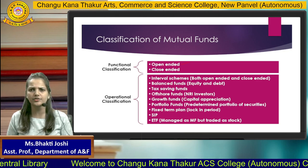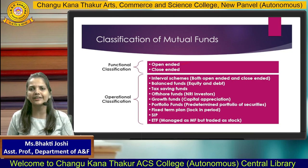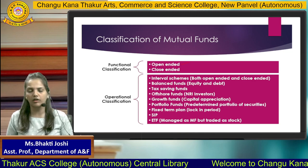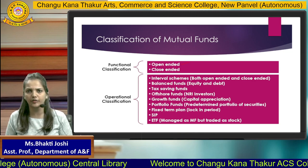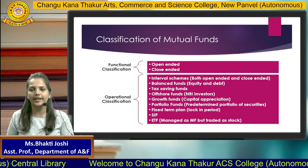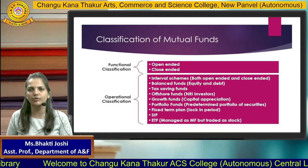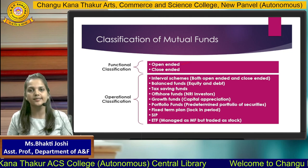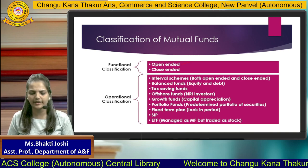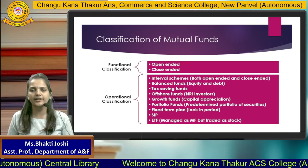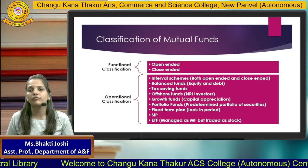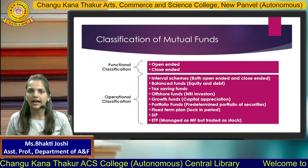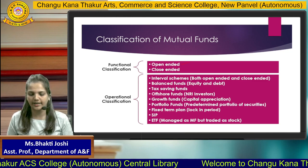Portfolio fund refers to a predetermined and proportionate allocation of your funds across different classes of investment in terms of securities. For example, if you invest 100% of your money, the allocation into equity and other securities is already predetermined by a formula. Such a fund is known as a portfolio fund. Fixed term plan is a type of fund wherein your funds are locked for a certain number of years and you cannot withdraw during that period. Therefore, this type of fund lacks liquidity and is called a fixed term plan.